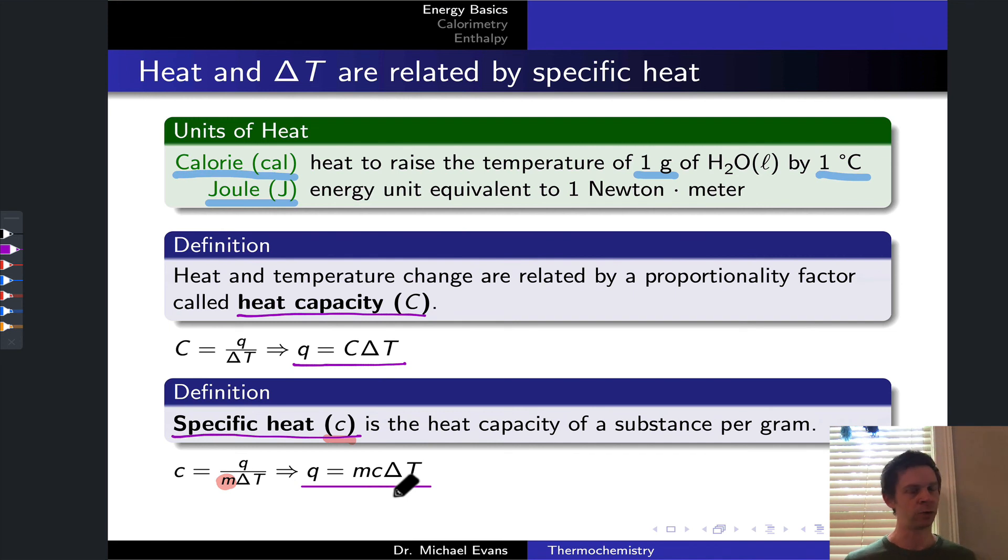And of course, the other side of the coin is substances with a very low specific heat, metals being the classic example, don't have a ton of places to store energy aside from just increasing in temperature. Metals, elemental metals, tend to have not a lot of places to put heat, and so it tends to go into increasing in temperature. Metals don't require much heat to increase in temperature as a result.